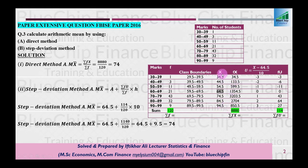Ab f ke saath x ko multiply karte jayein to fx product aa jayega. 34.5 × 1, 44.5 × 3, aur isi tarah. Sum of fx = 880 aur sum of f = 120. To 880 divided by 120 = 74. Yeh ho gaya direct method. Ab step deviation ya coding method — use bhi yahi kaha jata hai.